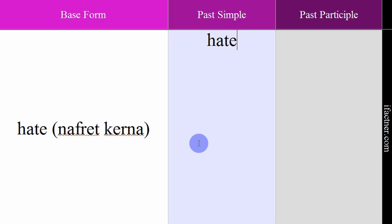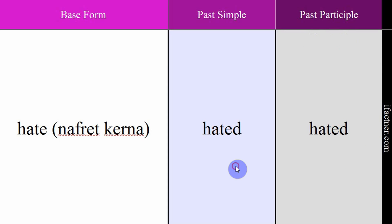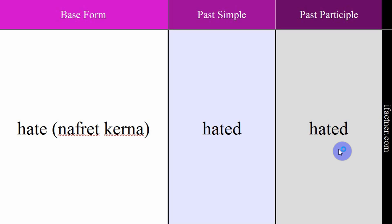The next verb is 'hate', meaning nafret kerna — to hate someone. Past simple form: hated. Past participle form: hated. Past simple example: 'He hated his parents.' — Woh apne maabaap se nafret kerta tha. Past participle example: 'She has hated him all her life.' — Woh usse apni poori zindagi nafret kerti rahi hai. Verb: hate. Meaning: nafret kerna. Past simple: hated. Past participle: hated.